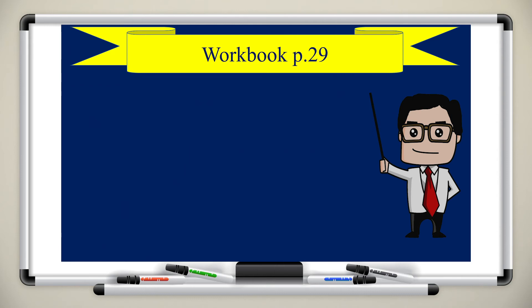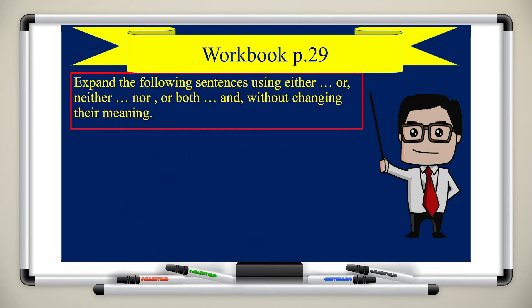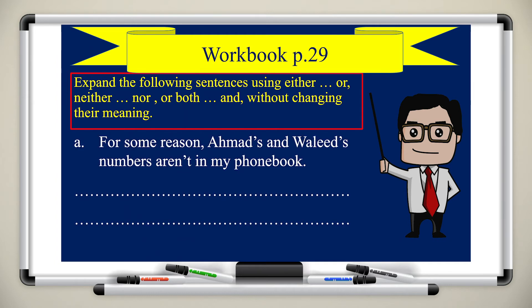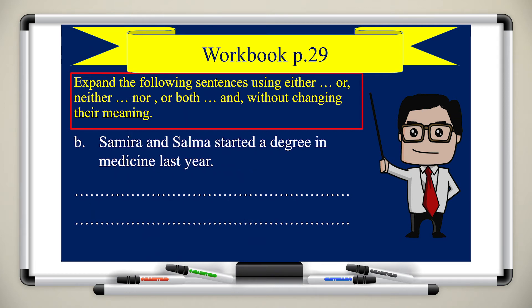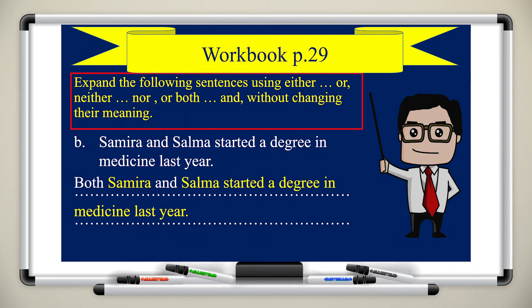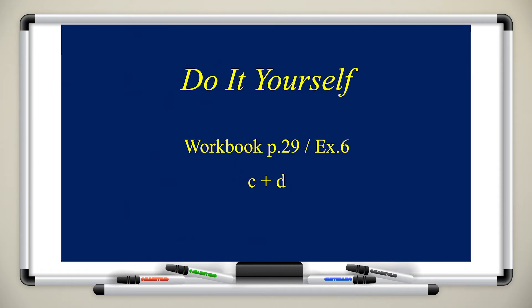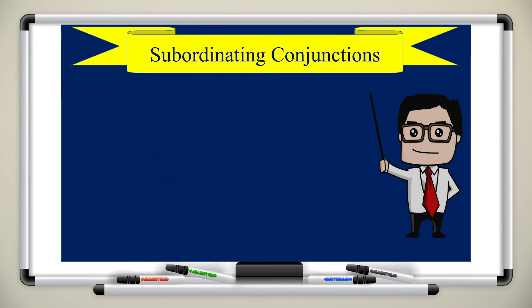Let's practice from workbook page 29: expand the following sentences using 'either...or,' 'neither...nor,' or 'both...and' without changing their meaning. Sentence A: 'Ahmed and Waleed's numbers aren't in my phone book' — it's a negative idea, so the answer is: 'For some reason, neither Ahmed nor Waleed's numbers are in my phone book.' Sentence B: 'Samira and Selma started a degree in medicine last year' — answer: 'Both Samira and Selma started a degree in medicine last year.' Now do it yourself: workbook page 29, exercise 6, answer C and D.